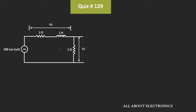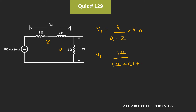Let's say this resistor is equal to R, and the impedance of this series combination is equal to Z. Voltage V1 can be given as R divided by R plus Z times Vin, which equals 1 Ω divided by 1 Ω plus (1 + jωL) times Vin, where L equals 1 henry. That means V1 is equal to Vin divided by 2 plus jω.